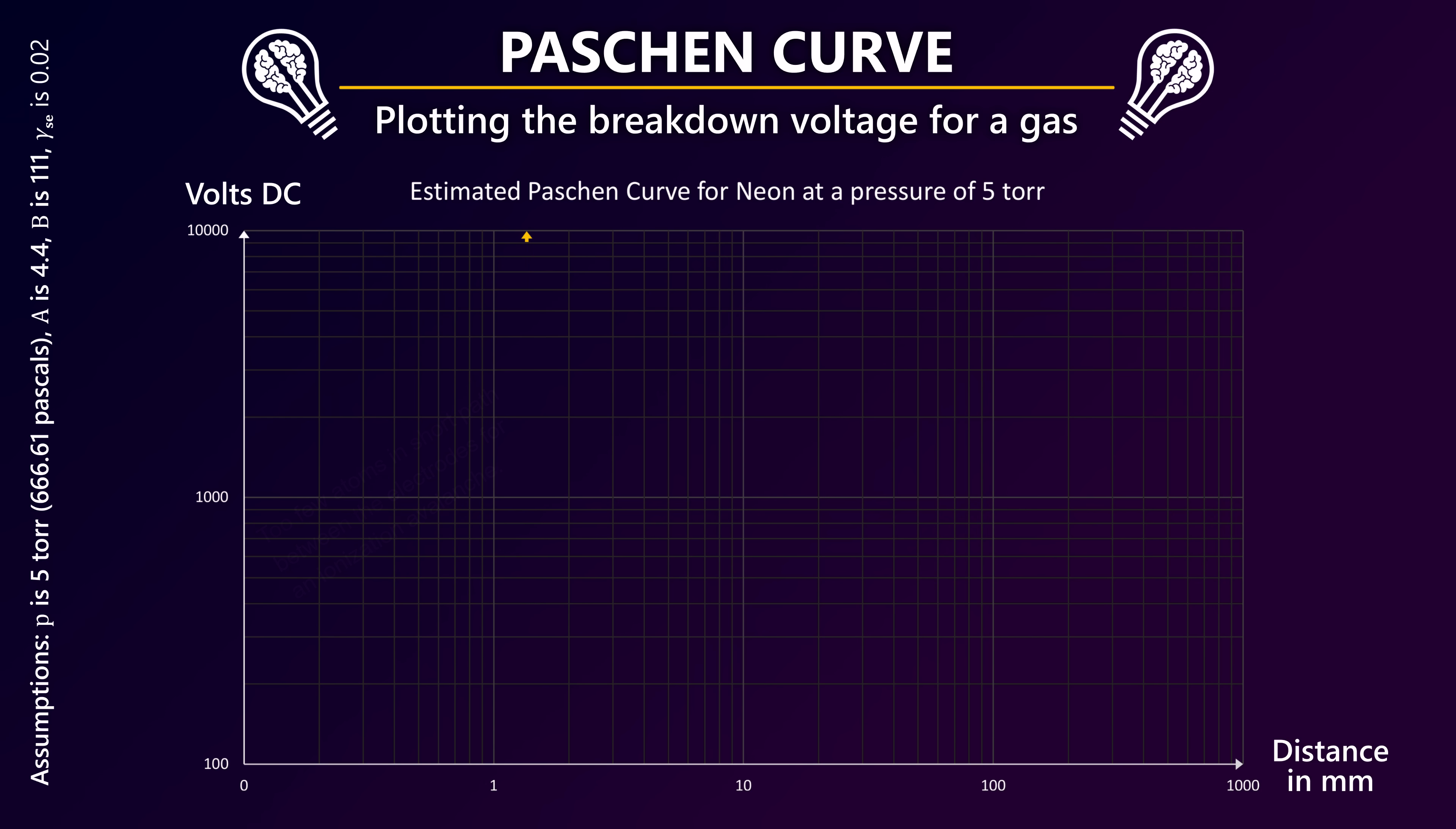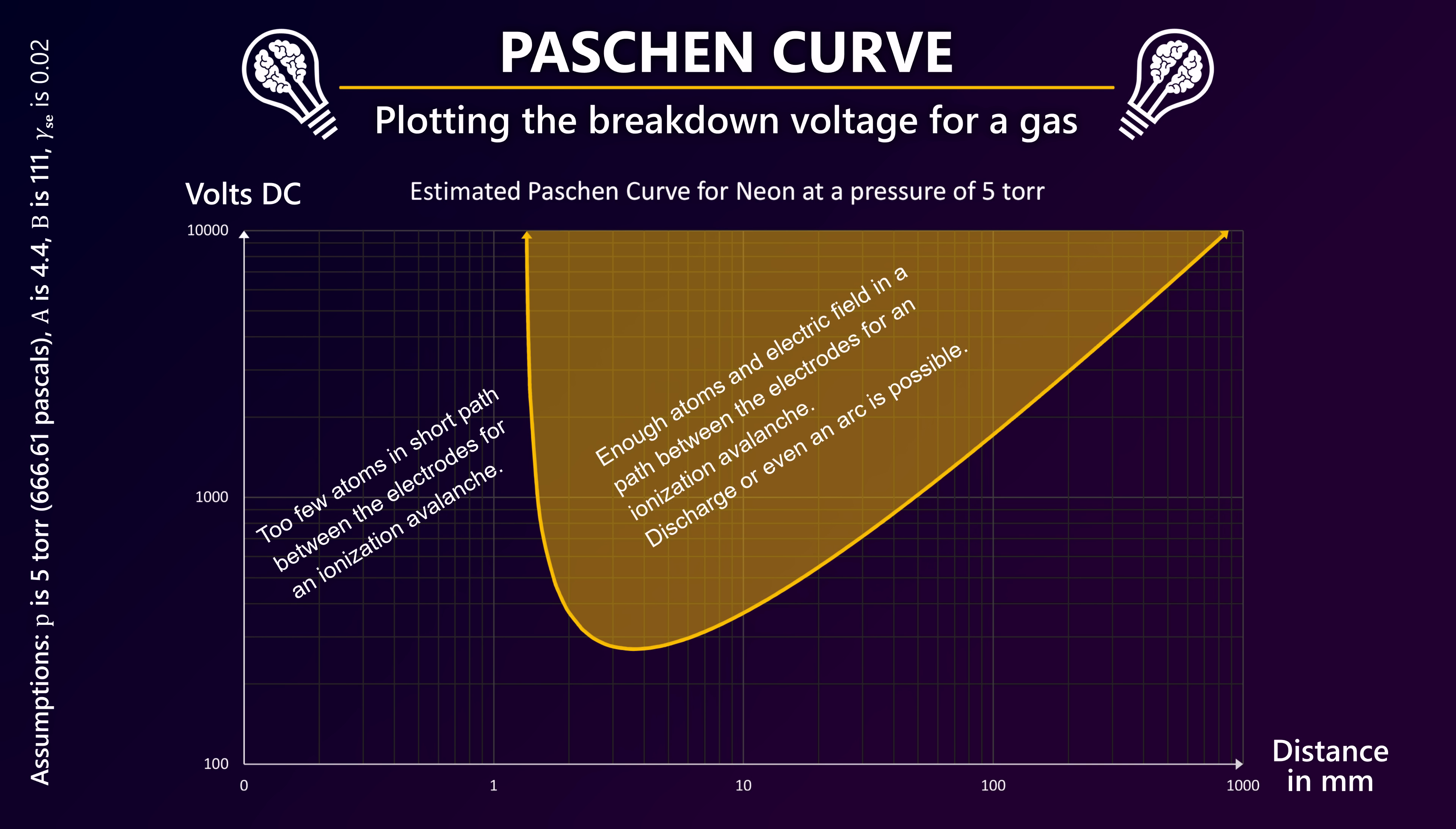The neon gas inside the bulb is at such a low pressure that the short 1 mm gap between the electrodes is too short for the discharge. There are simply too few neon atoms in the thin low pressure gas in a 1 mm short gap. Too few to make it likely for electrons to hit enough neon atoms in the chain reaction needed to form an ionized low resistance path for the discharge.